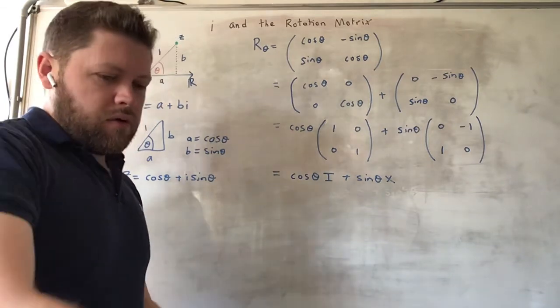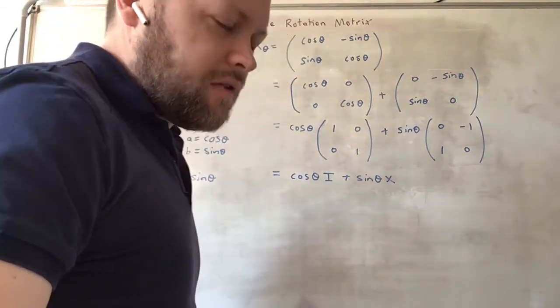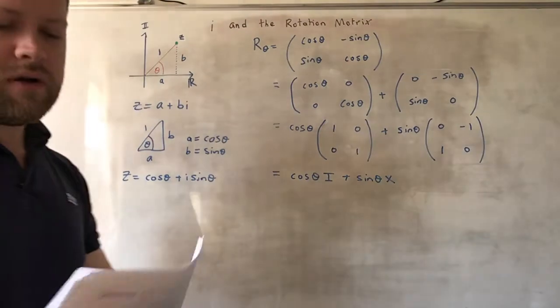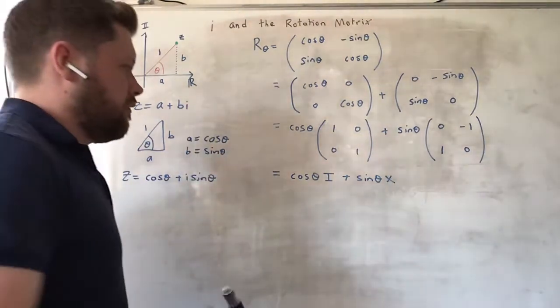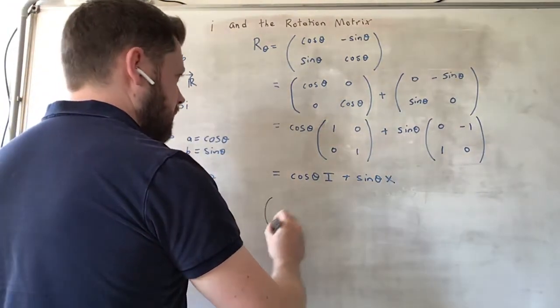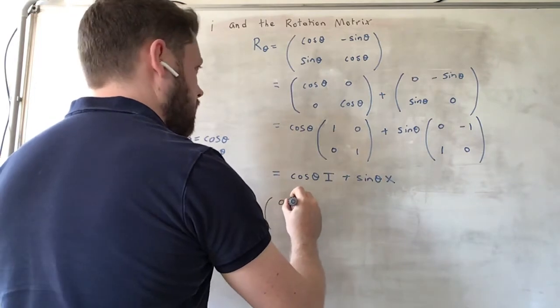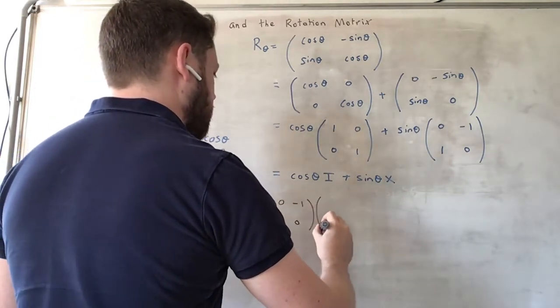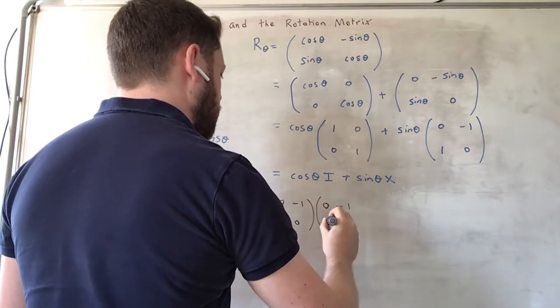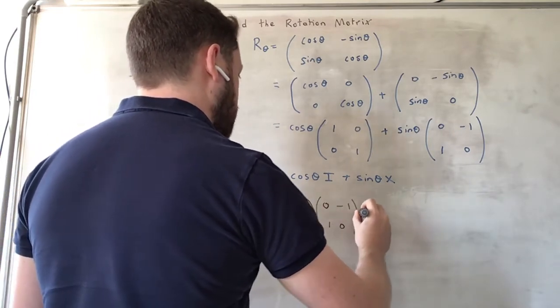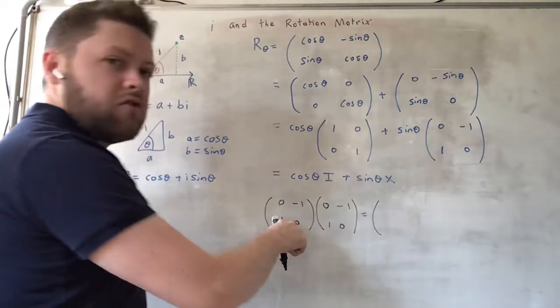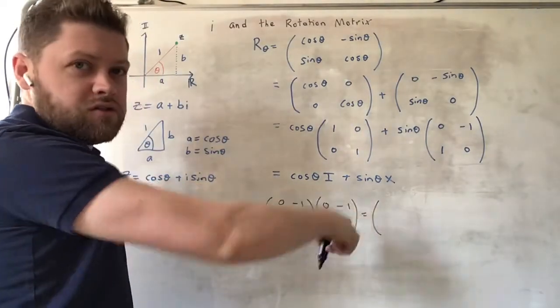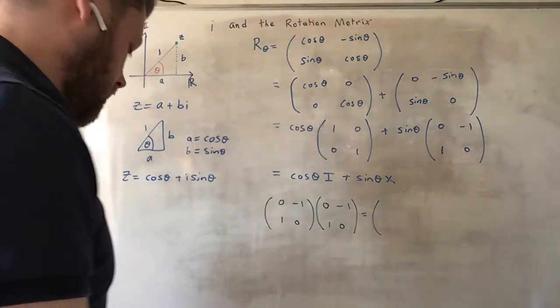Well we can attempt to answer that question by the following means. Let's take this matrix and multiply it by itself. This is a 2 by 2 matrix times a 2 by 2 matrix, and we should get a 2 by 2 matrix.